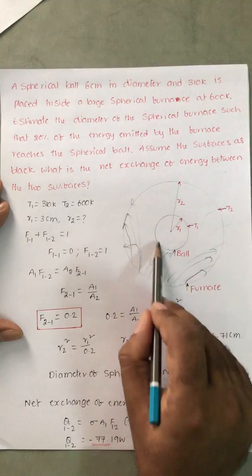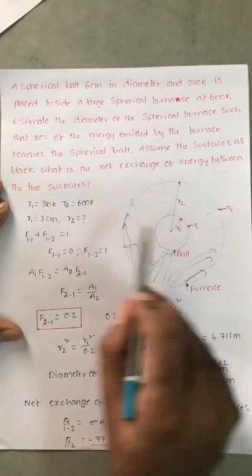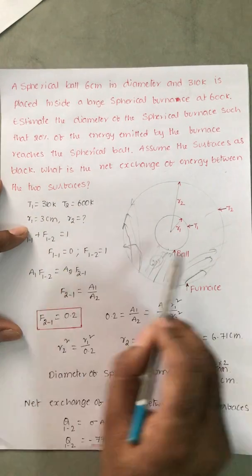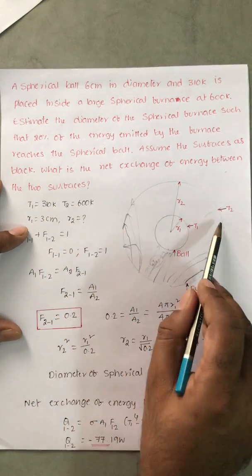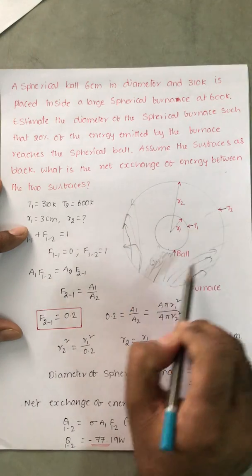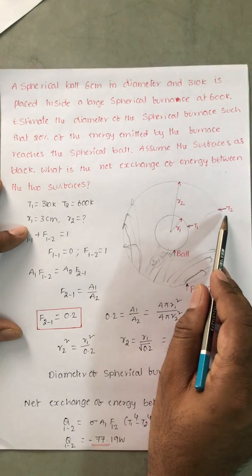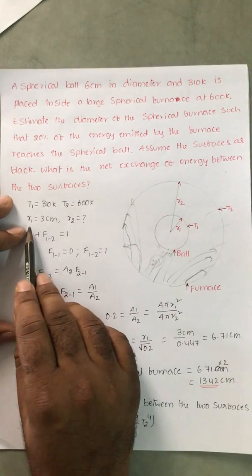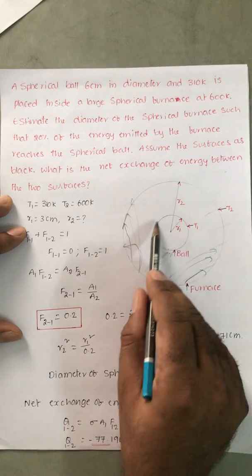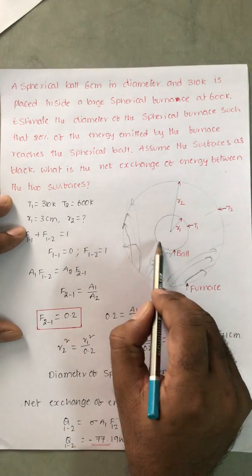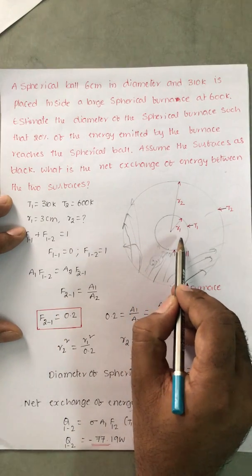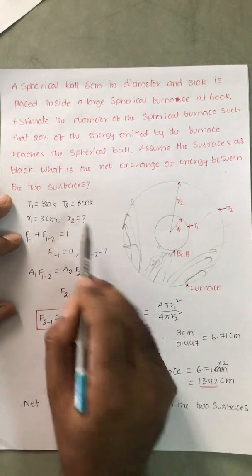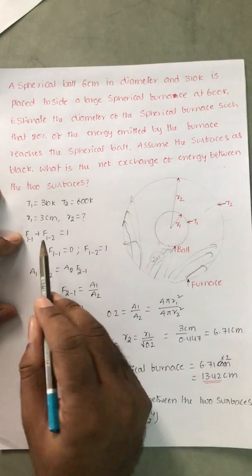Surface 1 is the small sphere with temperature T1 = 310 kelvin. Surface 2 is the large spherical furnace with temperature T2 = 600 kelvin. The small ball has diameter 6 cm, so radius R1 = 3 cm. R2 is what we need to calculate.